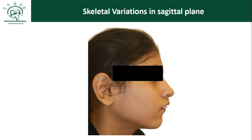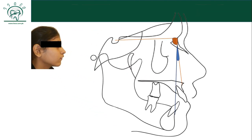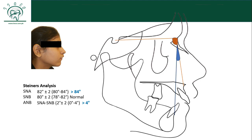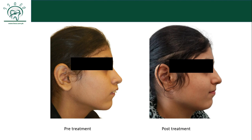Now look at this patient — she also has a convex profile, but when you draw a true vertical line, her mandible is near normal in the anteroposterior plane. However, the upper lip is far ahead of this line, showing that the problem lies in the upper jaw. On the lateral cephalometric radiograph, SNA has actually increased — it's more than 84 degrees — and that has resulted in an ANB value more than 4 again. So she also has a skeletal Class 2 profile, but the problem lies in the maxilla — skeletal Class 2 due to maxillary prognathism. While treating this patient, you won't grow the mandible forward; you will work on the maxillary part. I camouflaged this case with extraction of upper premolars, and her upper teeth along with the upper lip have moved back, giving a straight profile now.